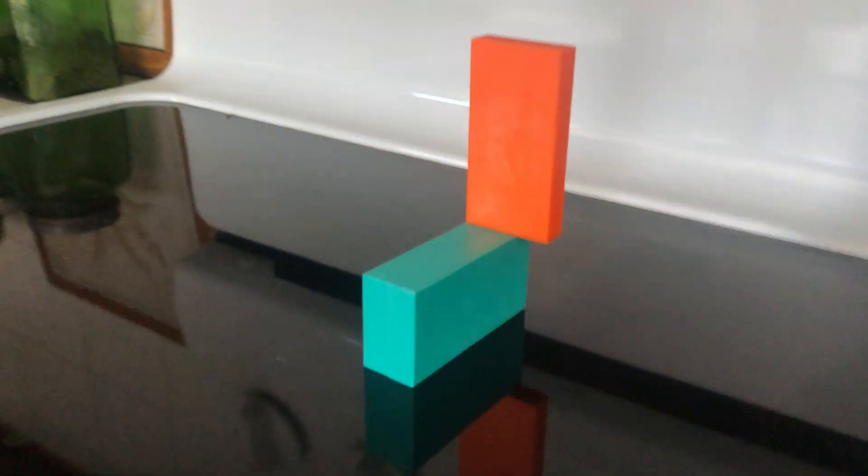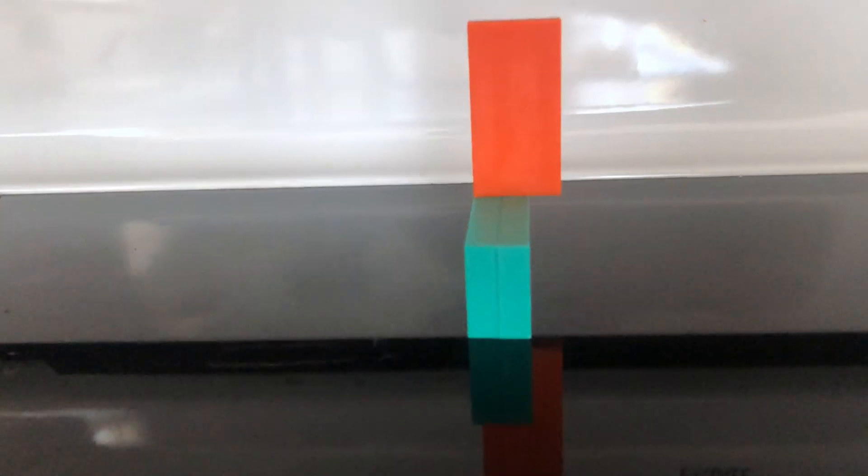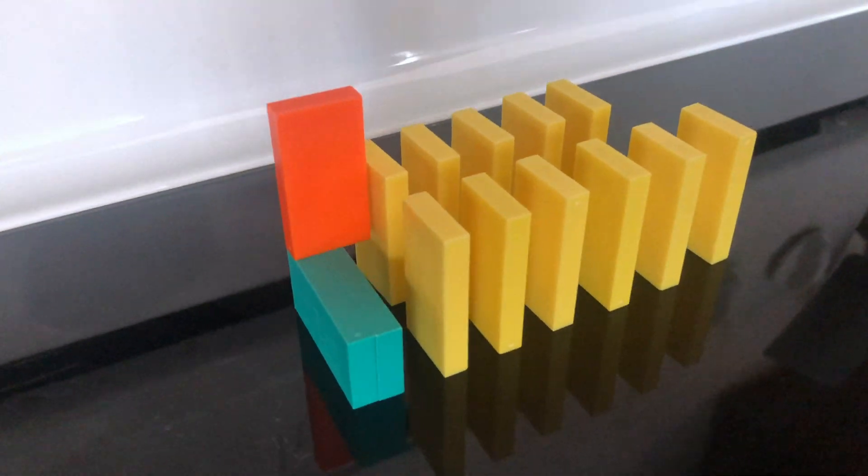It's a pretty simple setup. This is the main structure. Notice I put two dominoes side by side, and then on top I'll set the orange one with half of it tipping over the edge.